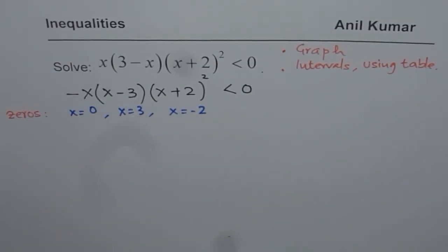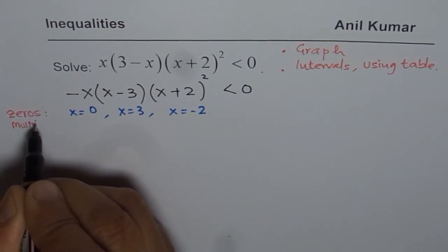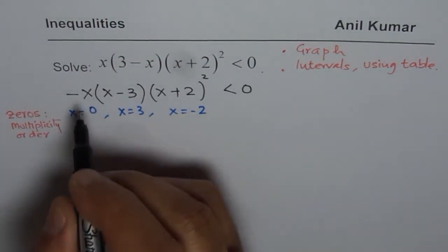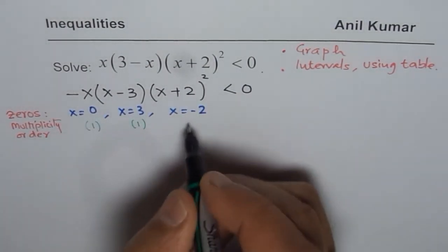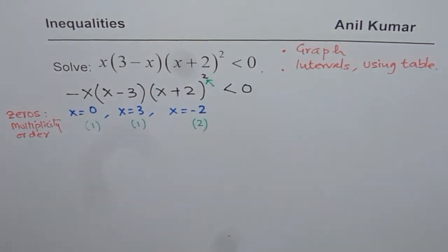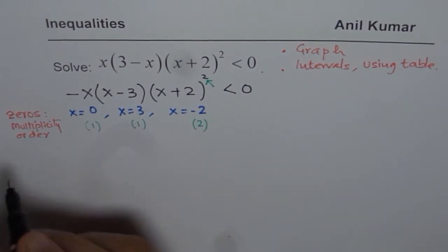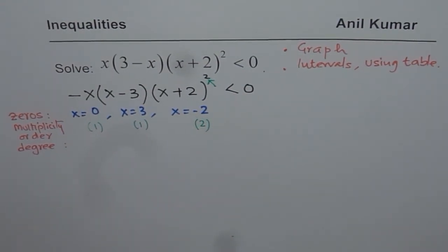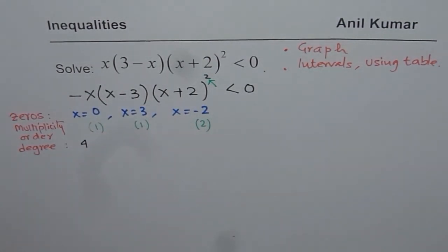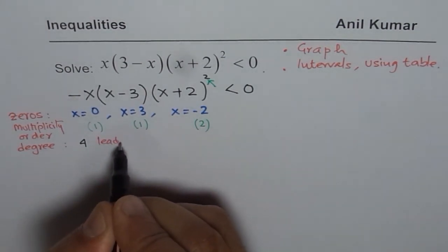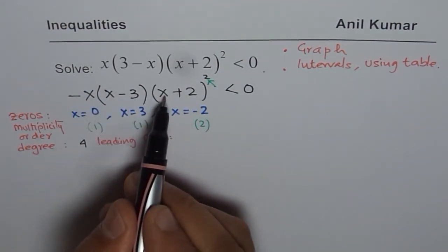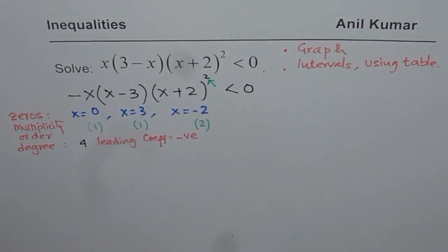Once we have these zeros, we need to check their multiplicity. For the first two zeros the multiplicity is 1, but for x equals minus 2 the multiplicity is 2 because of the squared factor — there are two zeros at that particular point. The degree is 4, and the leading coefficient is negative.